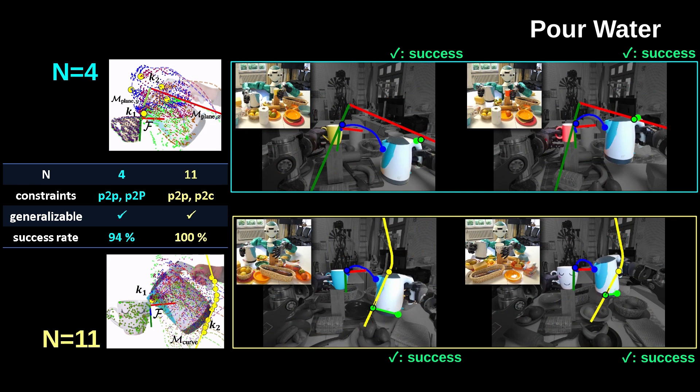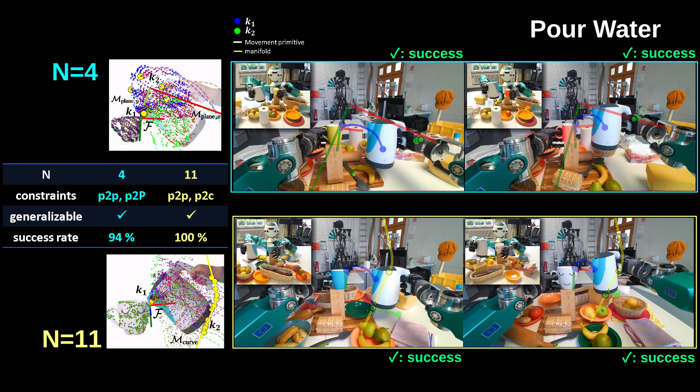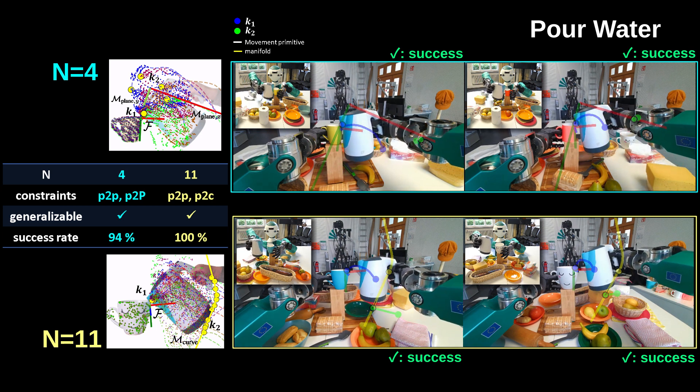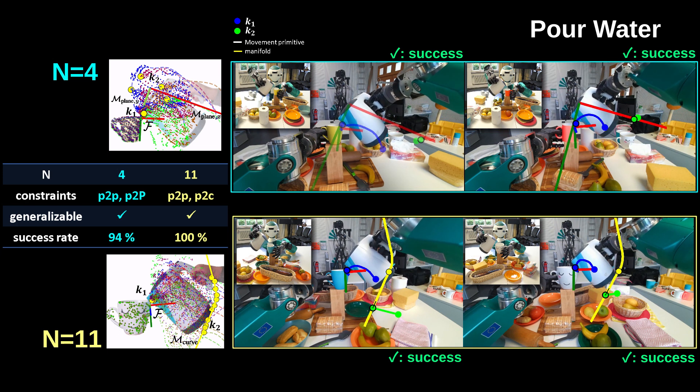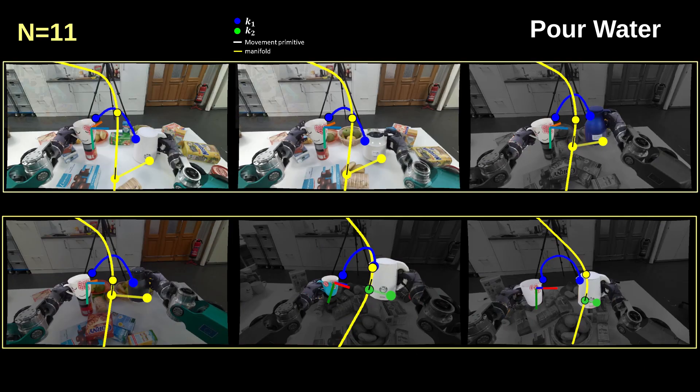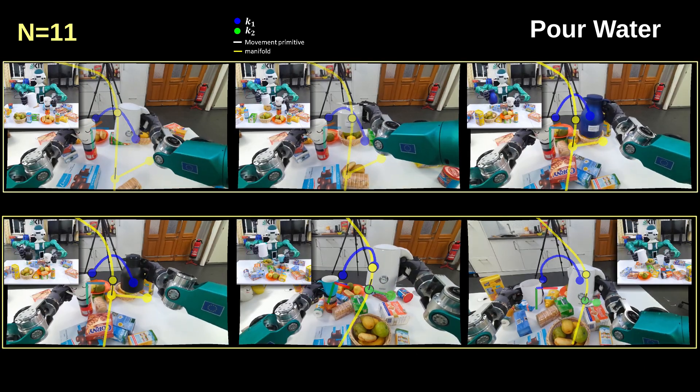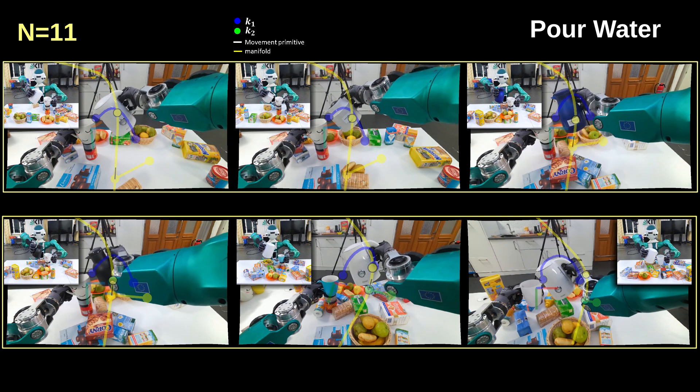With 4 and 11 demonstrations, KIVOS replaces the point-to-line constraint with a point-to-point and a point-to-curve constraint respectively. This either constrains the kettle to be vertical or aligns the bottom on the curve. These task representations generalize very well to different situations and thus achieve a higher success rate. We show more examples of how KIVOS generalizes to kettles of large shape variations.